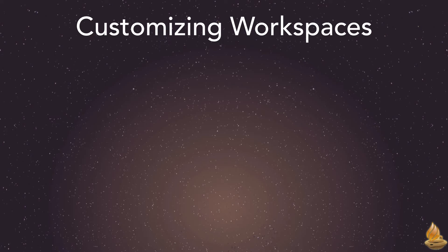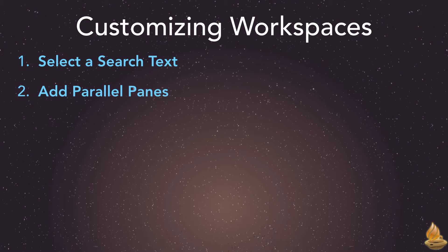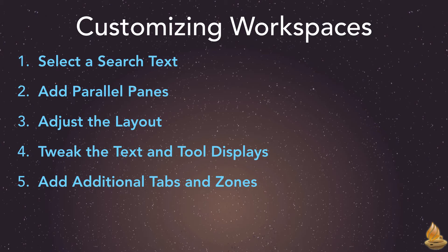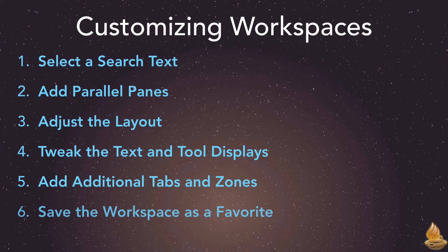There are six basic steps: select a search text, add parallel panes, adjust the layout, tweak the text and tool displays, add additional tabs and zones, and last, save the workspace as a favorite.